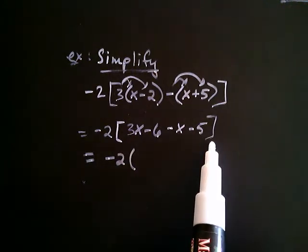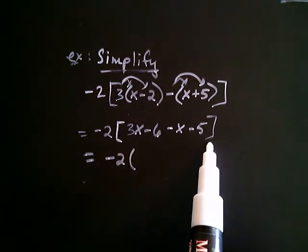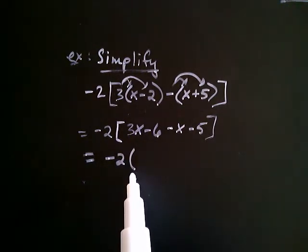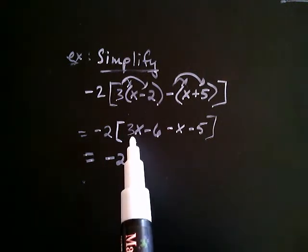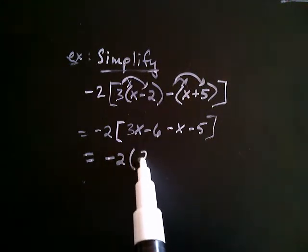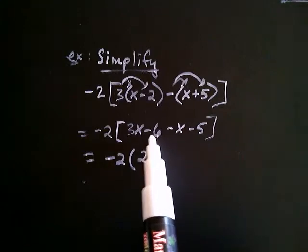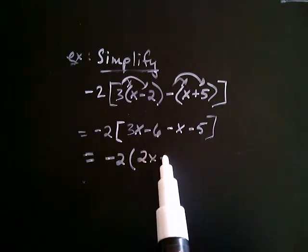When you only have one set of grouping symbols, typically people choose to write them, those as simply parentheses. So, 3x minus x is 2x. And, let's see, negative 6 and negative 5, well, that's negative 11.